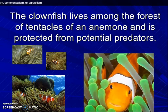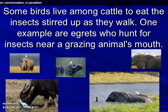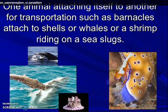Two clownfish live among the forest of tentacles of an animal and are protected from potential predators. Some birds which live among cattle eat the insects stirred up as they walk. For example, egrets hunt for insects near a grazing animal's mouth. One animal attaching itself to another for transportation, such as barnacles attached to shells or whales, or a shrimp riding on a sea slug.